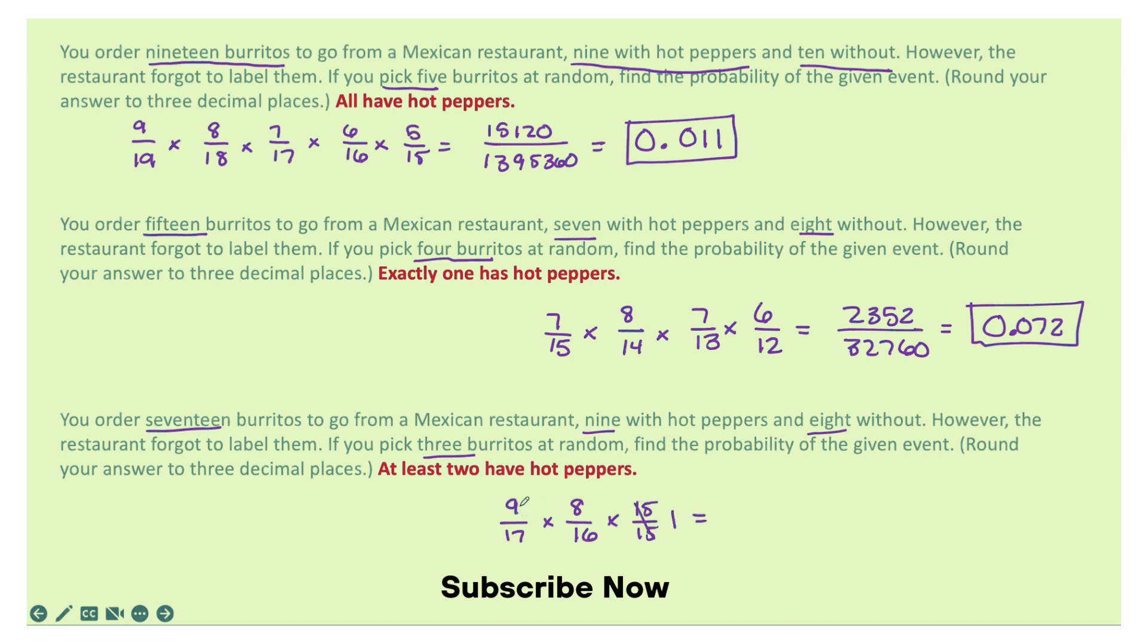And so multiplying 9 times 8 is 72, and then 17 times 16 is 272. And the probability is 0.265.